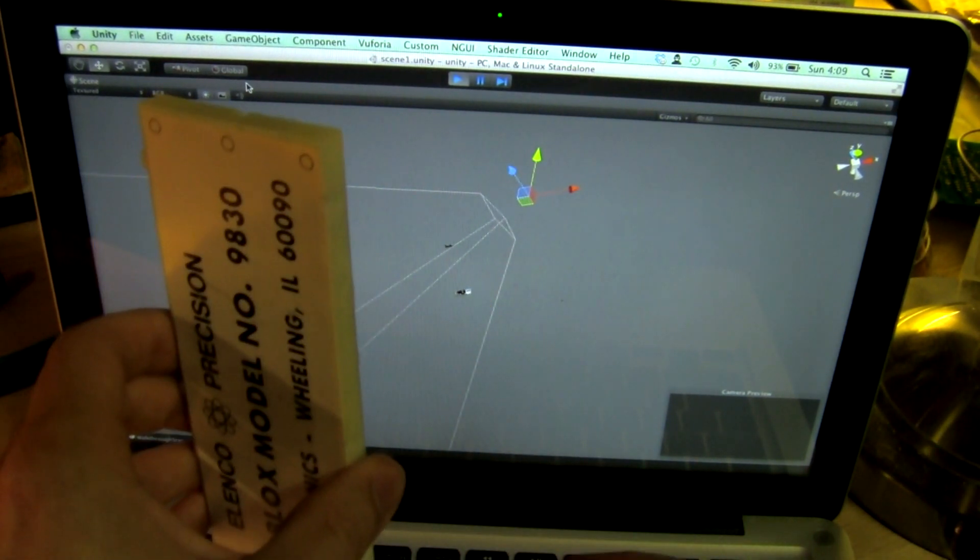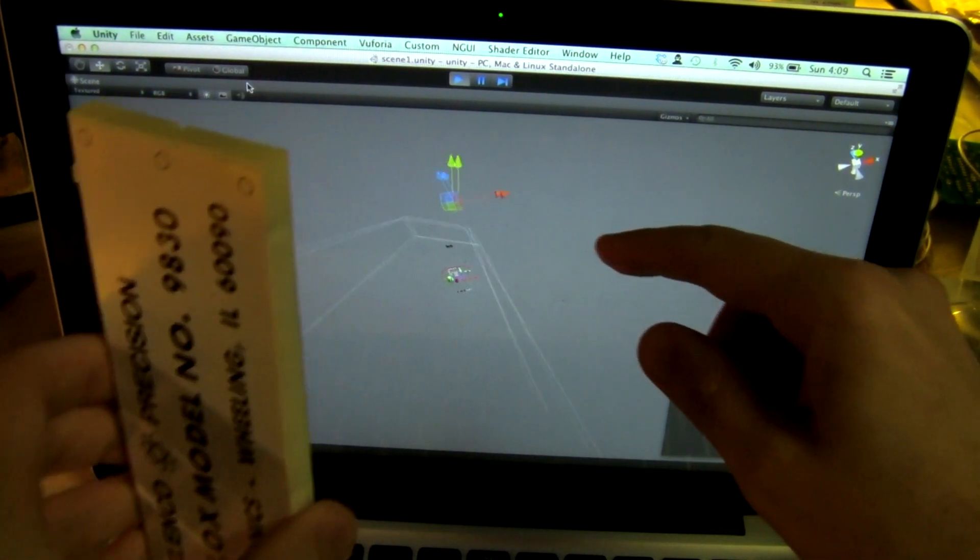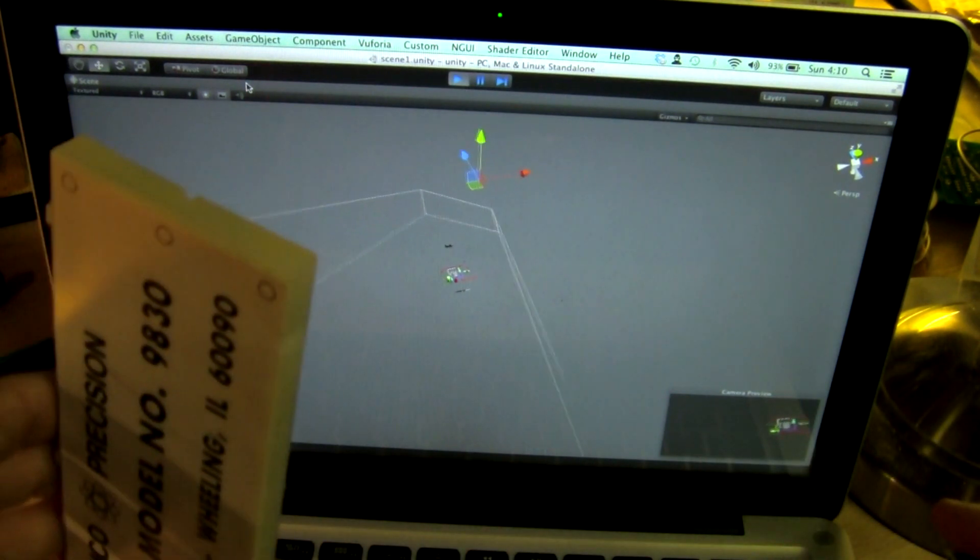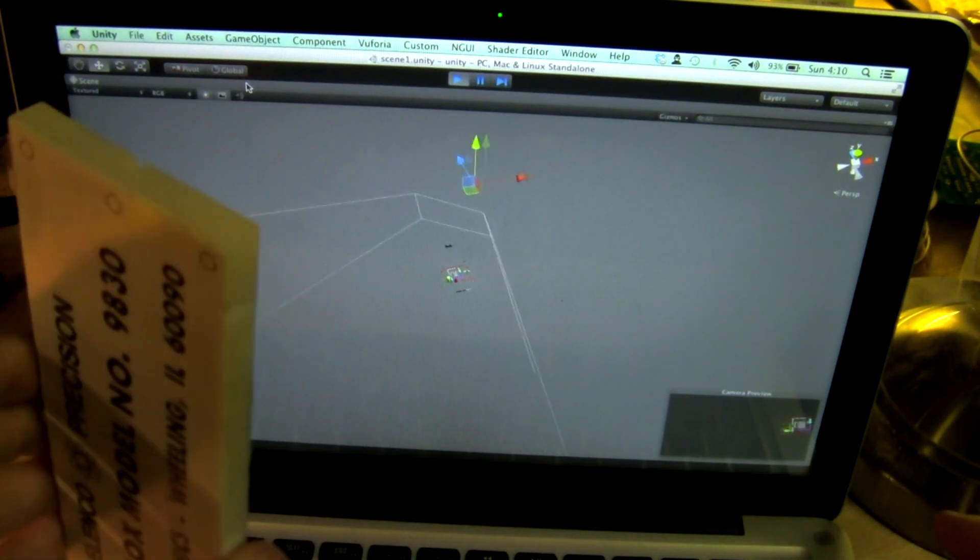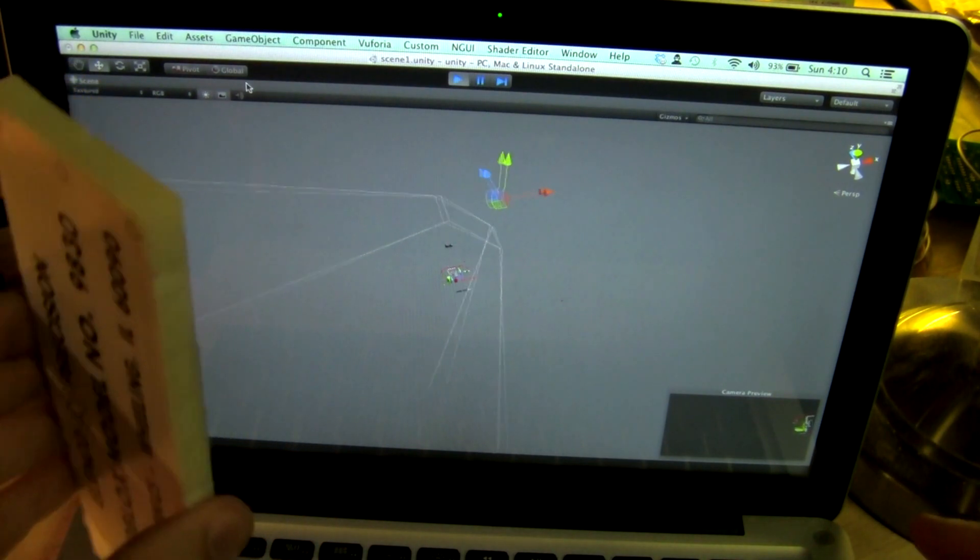So here on the screen I've got a representation of the camera and you can see it moving closer and farther away to my model and also rotating as I rotate the tracker image.